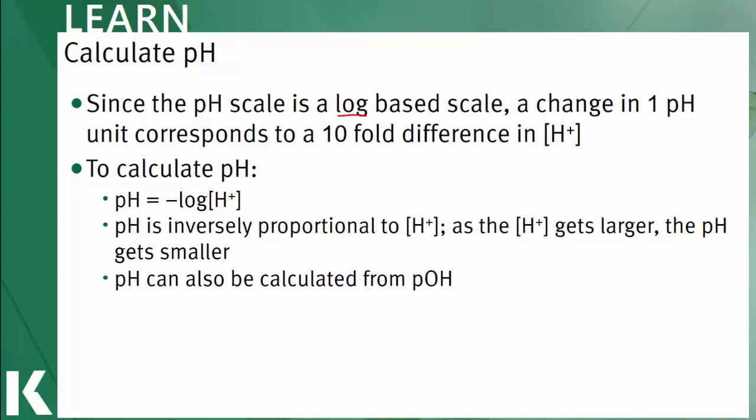The equation for pH is negative log of the concentration of the hydrogen ions. Notice the negative sign. It indicates an inverse relationship. That's why a low pH corresponds to a really high concentration of hydrogen ions. We can also use this information to calculate pOH values which we'll cover on the next slide.